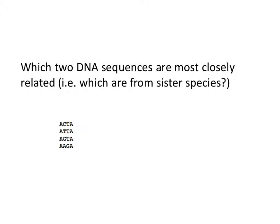There's one position — the second position here — C and T. Otherwise the two sequences are identical, so the distance between those first two is one. One and three is also a distance of one, and two and three also have a distance of one. So it's a trick question: there are three most closely related species on this tree according to the sequence similarity. All three pairs — one and two, one and three, and two and three — all have distances of one.